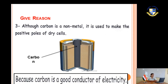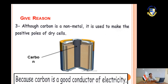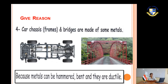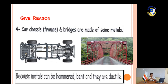Although carbon is a non-metal, it is used in making the positive pole of a dry cell because carbon is a good conductor of electricity. Car frames and bridges are made of metals because metals can be hammered, bent, or made ductile.